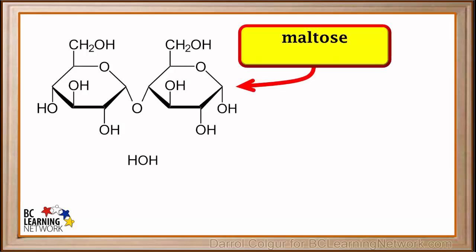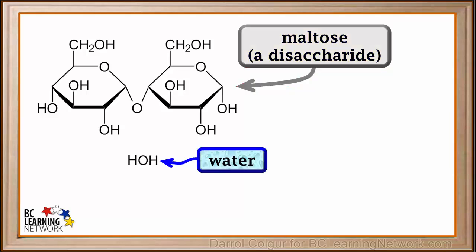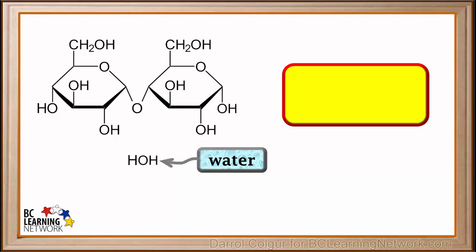When two glucose molecules bond together, they form another sugar called maltose. Because maltose is a combination of two glucose monomers, it is called a double sugar or disaccharide. The H atom from one glucose bonded to the OH from the other glucose forms a molecule of water. Because a larger molecule is made from two smaller molecules, this process is called synthesis. And because a water molecule is released, it is called dehydration synthesis.